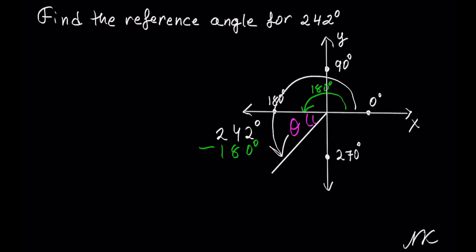So the difference between 242 degrees and 180 degrees is 62 degrees.